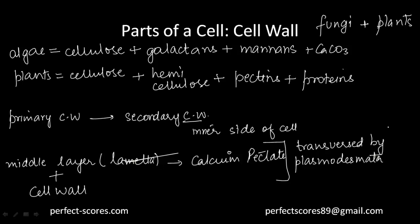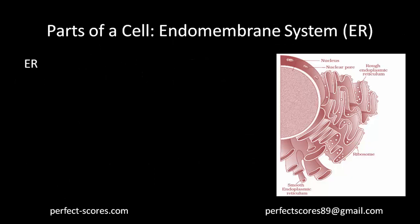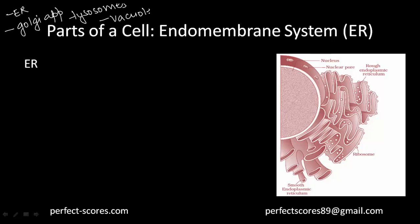Plasmodesmata connect the cytoplasm of various different cells around the central cell. Next is the endomembrane system, which refers to the membranous organelles found inside the cell. Some organelles are part of the endomembrane system because of their coordinated functions. The endomembrane system consists of the endoplasmic reticulum, the Golgi apparatus, lysosomes, and vacuoles. Organelles like mitochondria and chloroplasts are not coordinated with these components and are therefore not part of the endomembrane system.